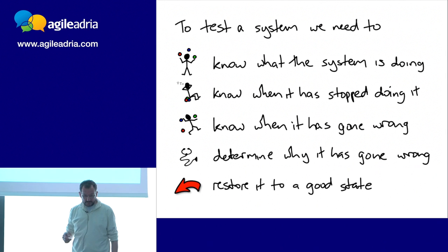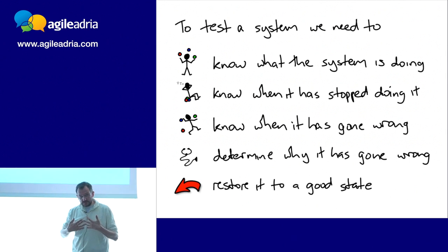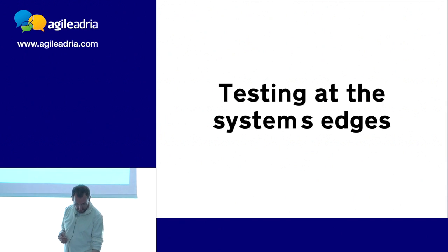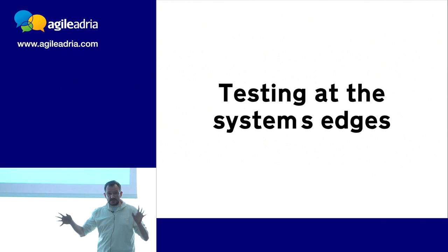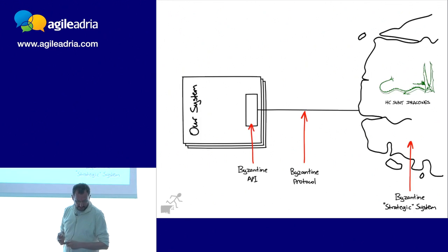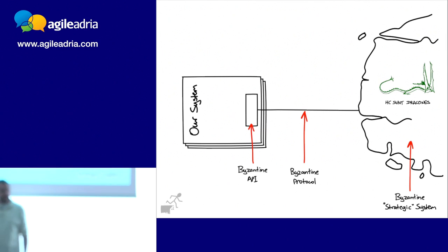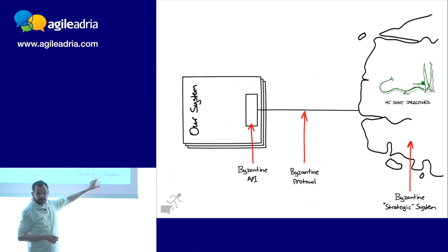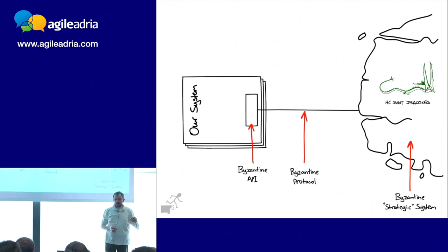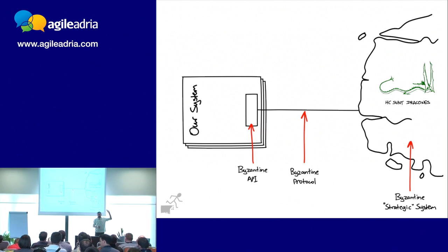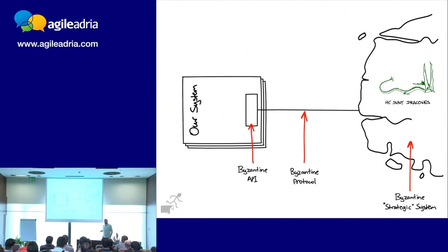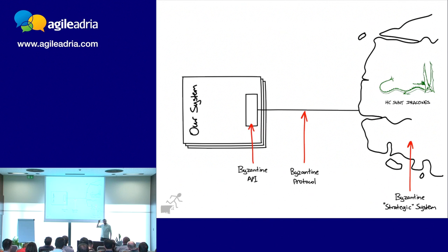Our claim is that test-driven development at the system level tends to drive out the hooks we need to support the system in production. Here's a common example: our nice clean system needs to talk to this byzantine enterprise system that has the data we need. We can't create one of those to test against — it's too hard and expensive. We can't substitute at the protocol level because they're using a clever binary protocol. They've hopefully given us a library we can plug in, but it's completely locked down, and by the way it leaks memory.